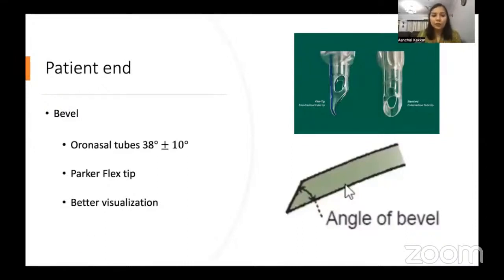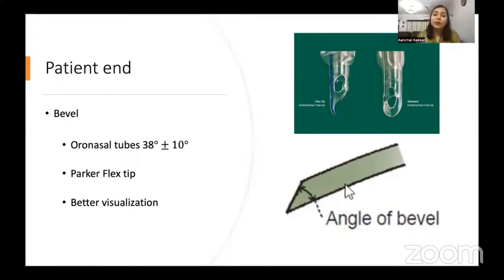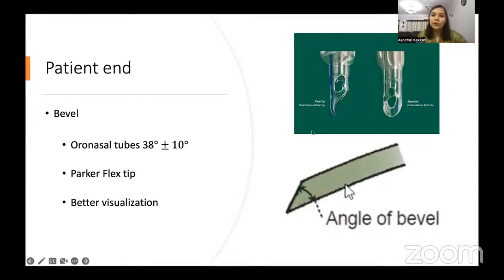Nowadays we have oro-nasal tubes — previously oral and nasal tubes were separate with different bevel angles. Now, as a standard rule, we have oro-nasal tubes with a bevel of 38 degrees plus or minus 10 degrees. The advantage of having a bevel is that it provides better visualization — the mouth is a small opening, so the angled bevel provides better visualization when inserting.